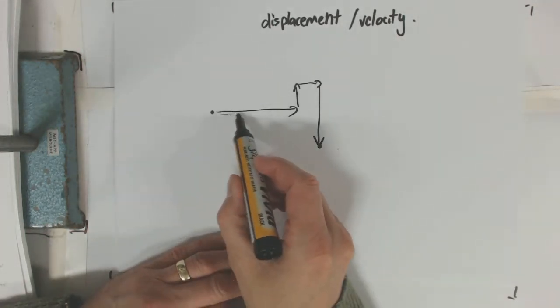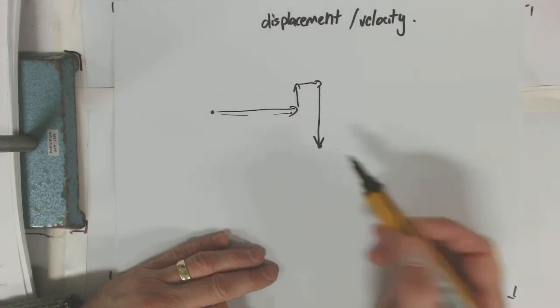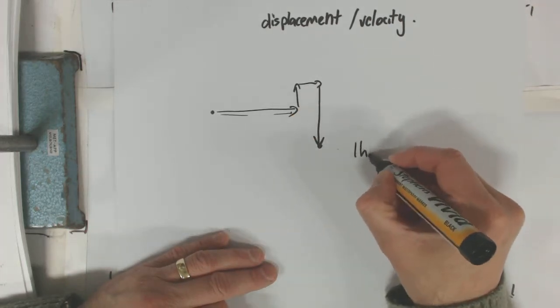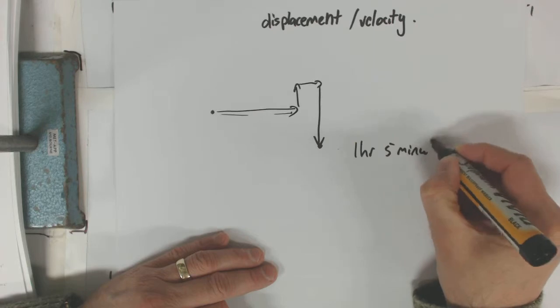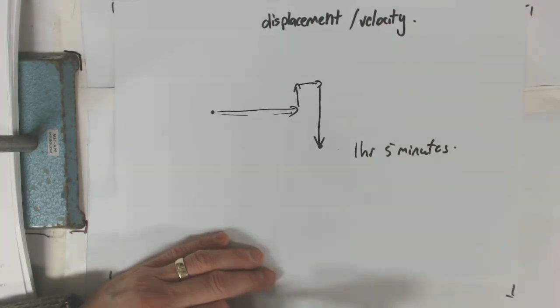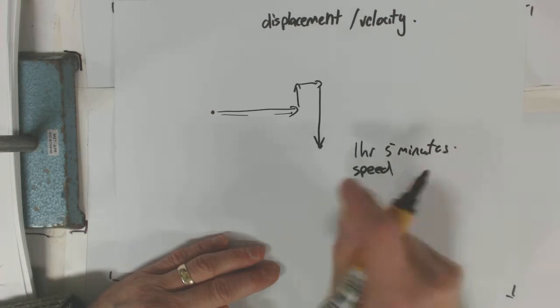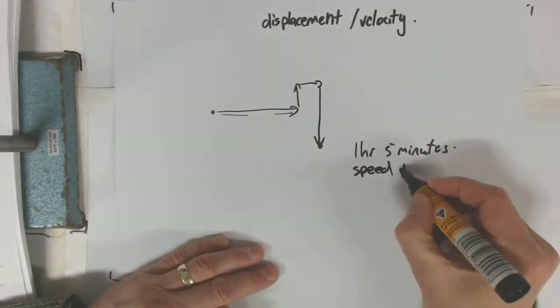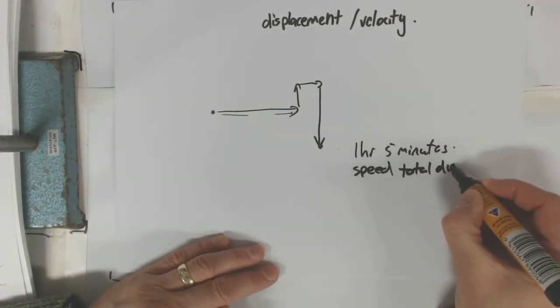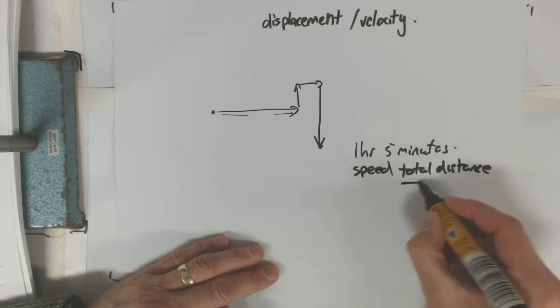Now your distance is all of these added up. Maybe this run took 1 hour, 5 minutes. So your speed is total distance divided by total time.